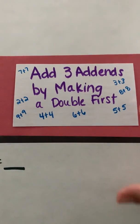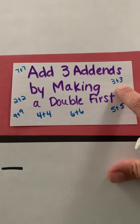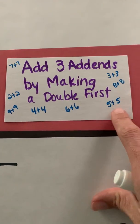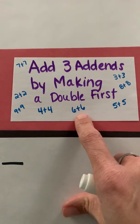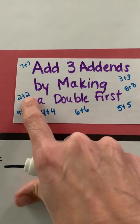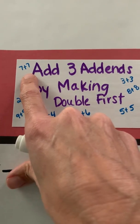So remember you've worked on knowing what 3 plus 3 is automatically, 8 plus 8, 5 plus 5, 6 plus 6, 4 plus 4, 9 plus 9, 2 plus 2, and 7 plus 7.